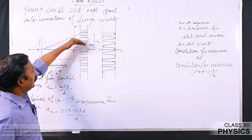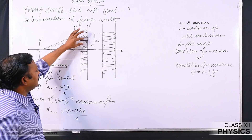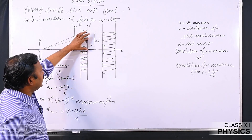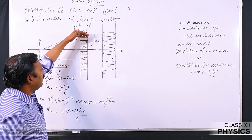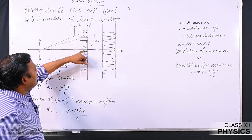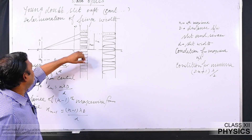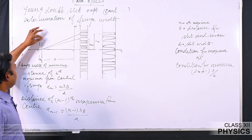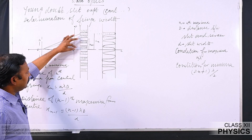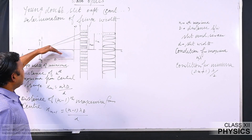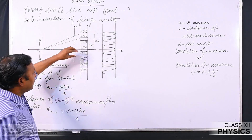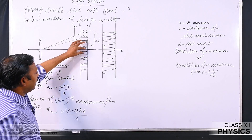Bright and dark bands are completely distinguishable — that is, a bright fringe is completely bright and a dark fringe is completely dark. In that case we determined the distance of nth maxima as well as nth minima from the central fringe. We also learned that the central fringe obtained is a bright fringe, because all the wave fronts arising from sources S1 and S2 travel equal path, reaching point O where the central fringe is formed. Because of that equal path, the path difference becomes zero, and we get the central maxima.